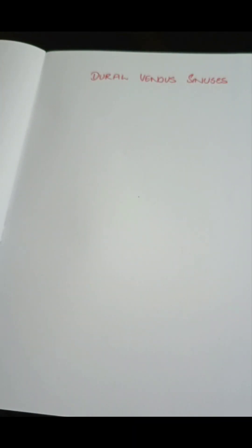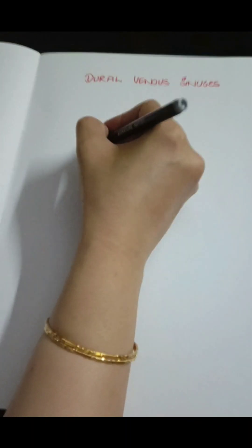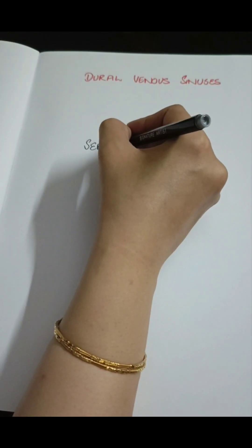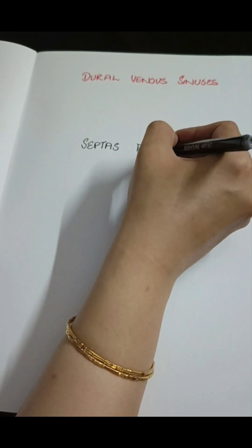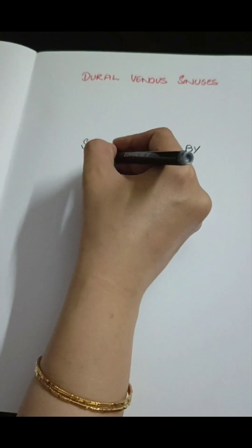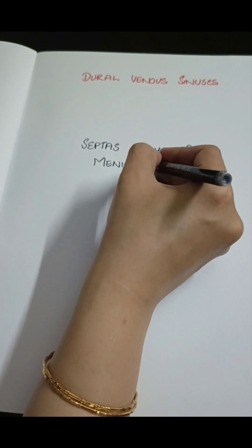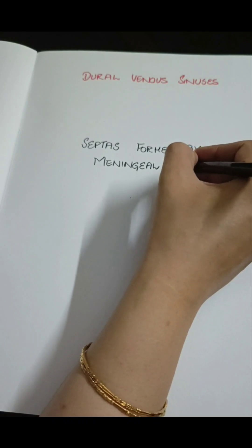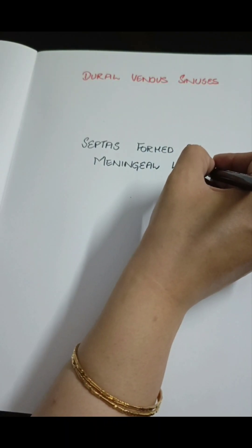The next important concept to develop is the septals formed by the meningeal layer of the dura. There are four septals of the meningeal layer of the dura that we can appreciate at the level of the brain.